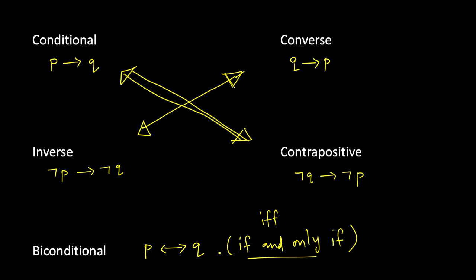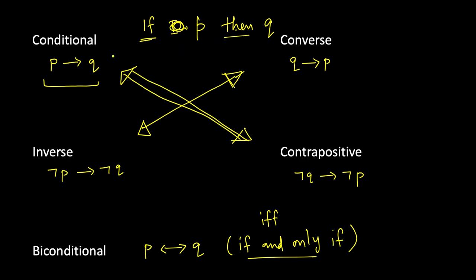We will see how to convert these statements into English or vice versa. For a conditional, we write 'if P, then Q' — 'if' and 'then' are placed around the arrow. To convert back, we remove 'if' and 'then' and replace them with the implication arrow. Note that P implies Q does not mean Q also implies P; they are not equivalent, as a truth table would show.